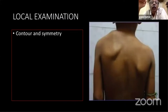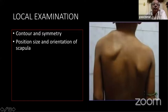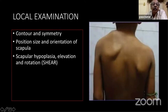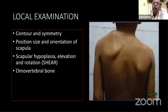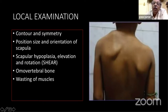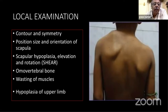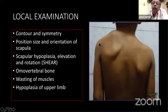On local examination, look for the contour and symmetry of the shoulder — by inspection, you can find asymmetry and a different contour. Look at the position, size, and orientation of the scapula and whether there is any scapular rotation. There will be scapular hypoplasia, elevation, and rotation — often described as the SHEAR lesion. The omovertebral bone may be palpable in this area. Muscle wasting is not very common but may be seen. Congenital absence of muscles like pectoralis major may be seen when associated with Poland syndrome. There may be hypoplasia of the whole upper limb.